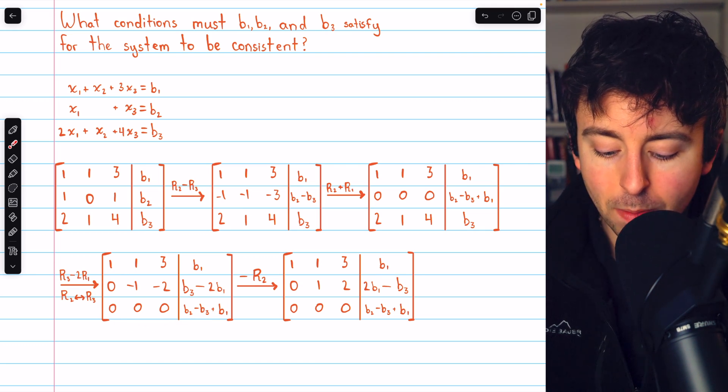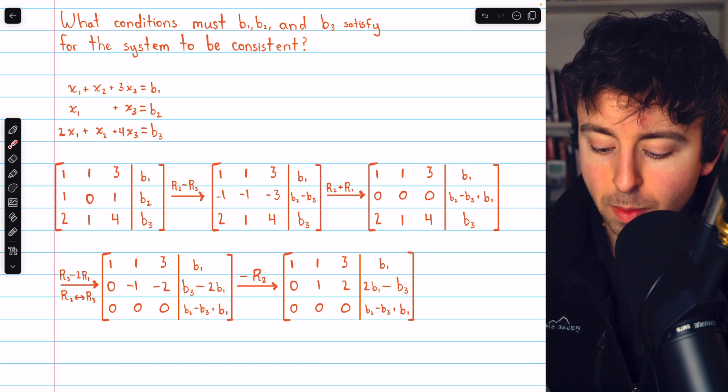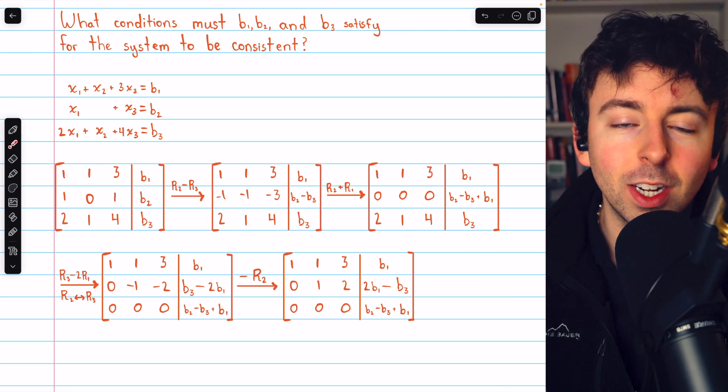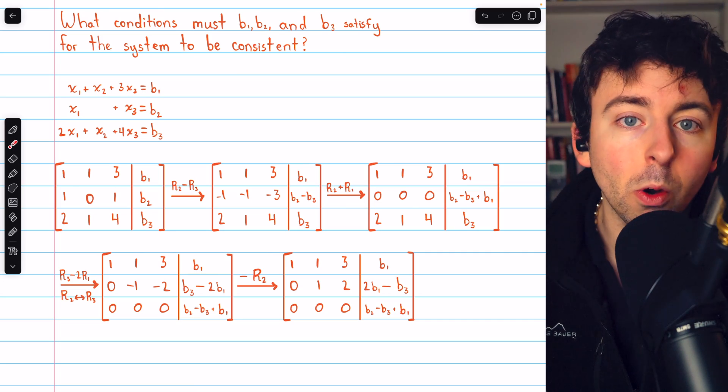Finally, to make this leading entry a positive 1, we'll multiply row 2 by negative 1, which gets us here. We've now completed Gaussian elimination, and this gives us the answer to our question.